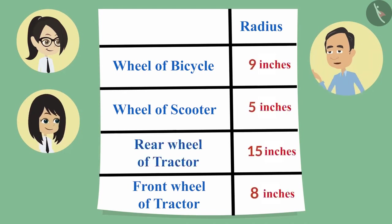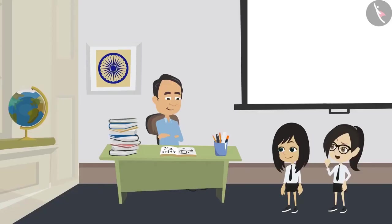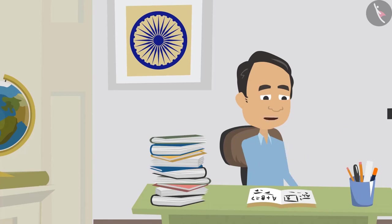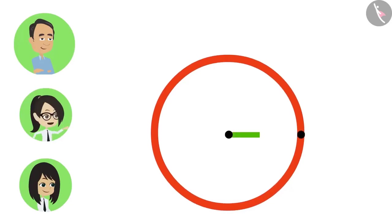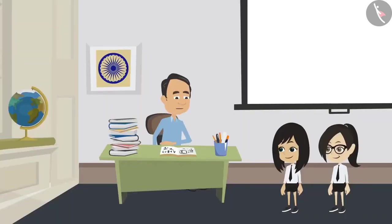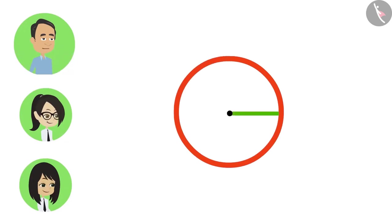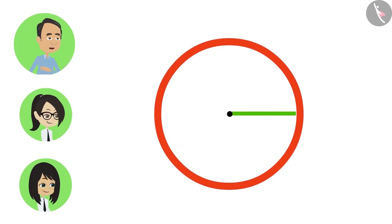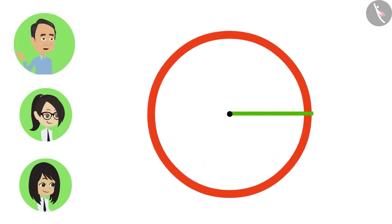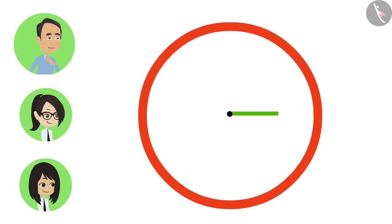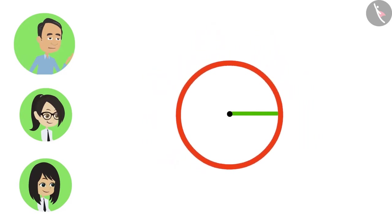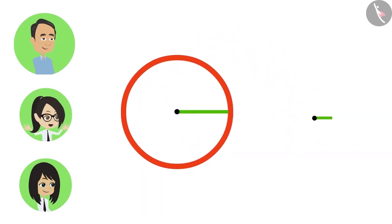Sir, how can we tell whether a circle is small or big by measuring the radius? We can definitely say. Radius is the distance from the center to the boundary. If we increase the radius, the distance from center to the boundary will increase. This is a circle whose radius is this. Now we will increase this radius — we get a big circle. If we increase further, we get an even bigger circle. If we decrease the radius, we get a small circle. Larger the radius, the larger the circle; smaller the radius, the smaller the circle.